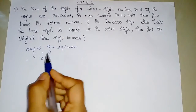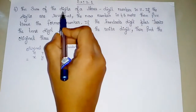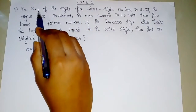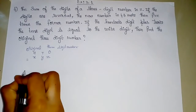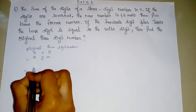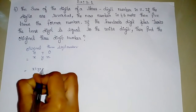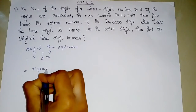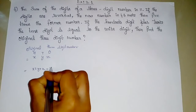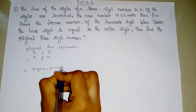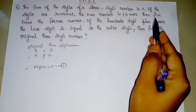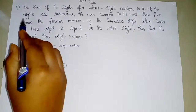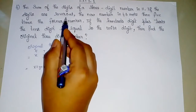The sum of all digits equals 11, so X plus Y plus Z is equal to 11. This is Equation number 1.